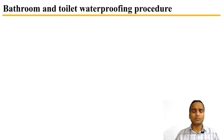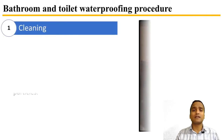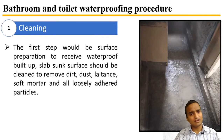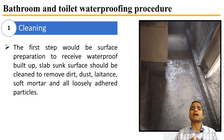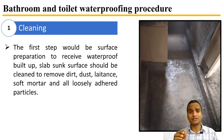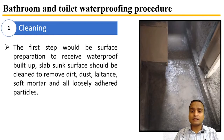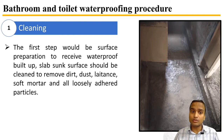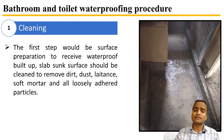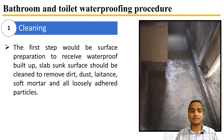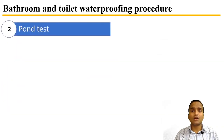The first procedure is cleaning. Surface preparation is very important and must be done by cleaning either with an iron brush or tin flats. The sunken slab surface should be cleaned thoroughly to remove all dirt, dust, lichens, soft mortar, and loosely adhered particles. After thorough cleaning of the entire surface, it becomes very important to do a normal pond test.